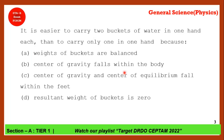It is easier to carry two buckets of water, one in each hand, than to carry one in one hand because when you are holding two things in each hand, your center of gravity and center of equilibrium falls within the feet. Option C is the correct answer.